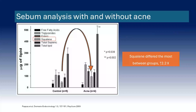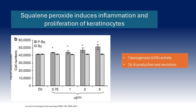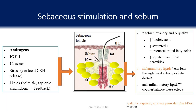Increasing quantity of sebum is also accompanied by a change in quality of the sebum. The sebum becomes more pro-inflammatory. And that pro-inflammatory sebum can trigger off inflammation at the level of the oil pump, the sebaceous gland, as well as the level of the tube itself, the oil duct.